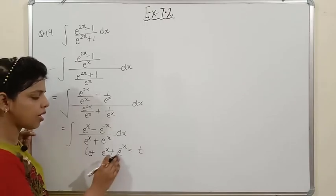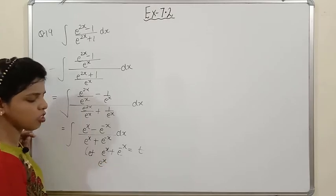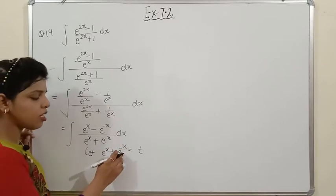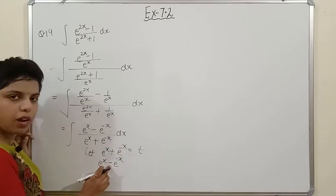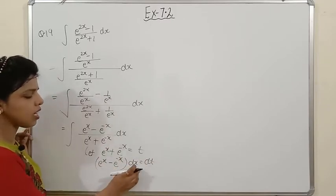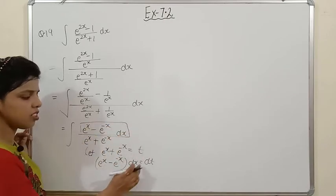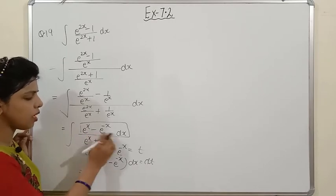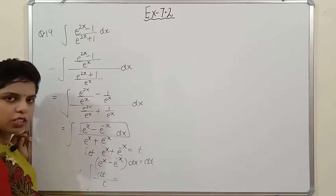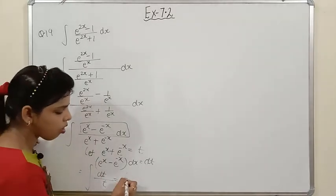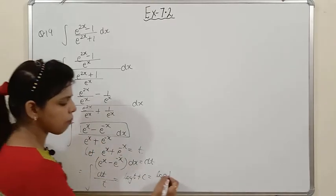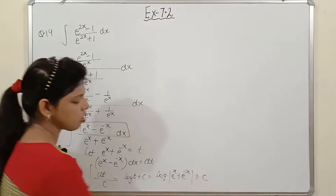Substituting, the integral becomes ∫(1/t) dt = log|t| + c = log|e^x + e^(−x)| + c. Please note this down.